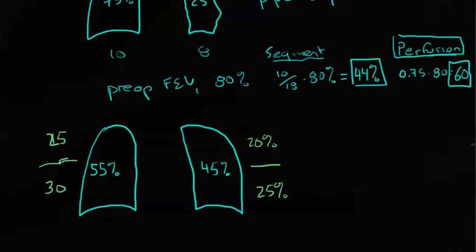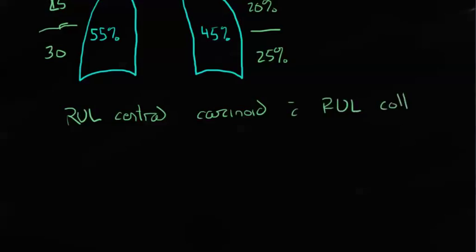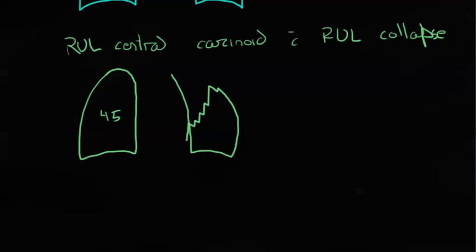You can use this to make an estimate as well. Because, let's say, you had a patient with a right upper lobe central carcinoid with right upper lobe collapse. In this situation, you could get your perfusion study, and let's say your perfusion study came back like this with 45% here on the right. Let's just erase that real quick. 55% over here.